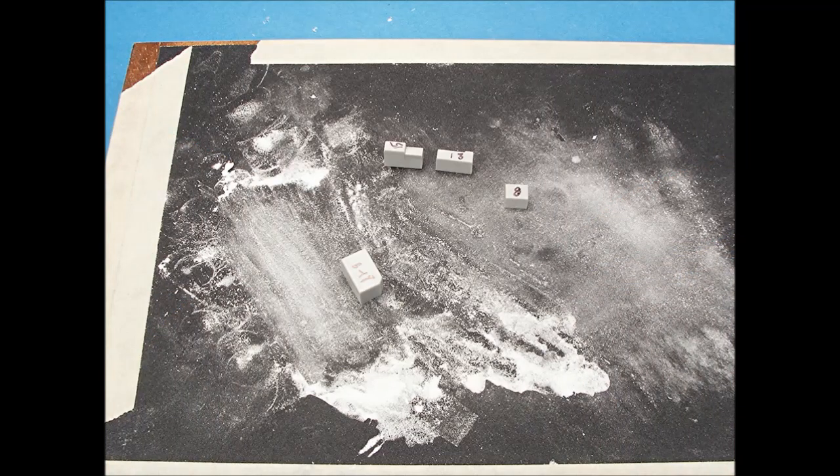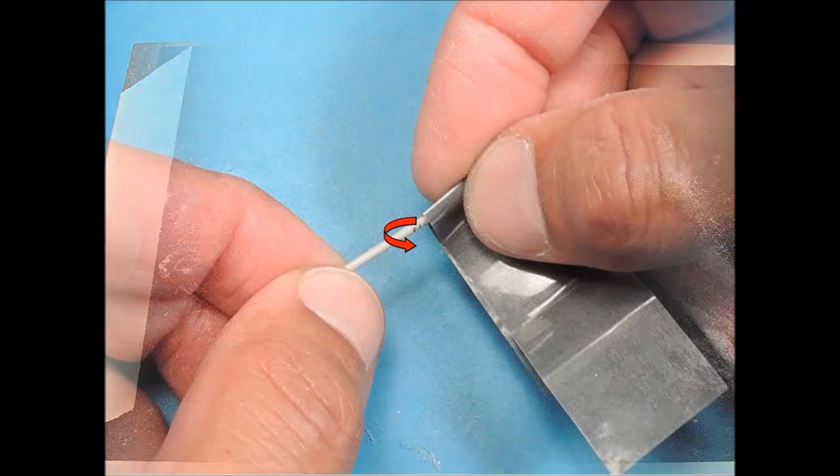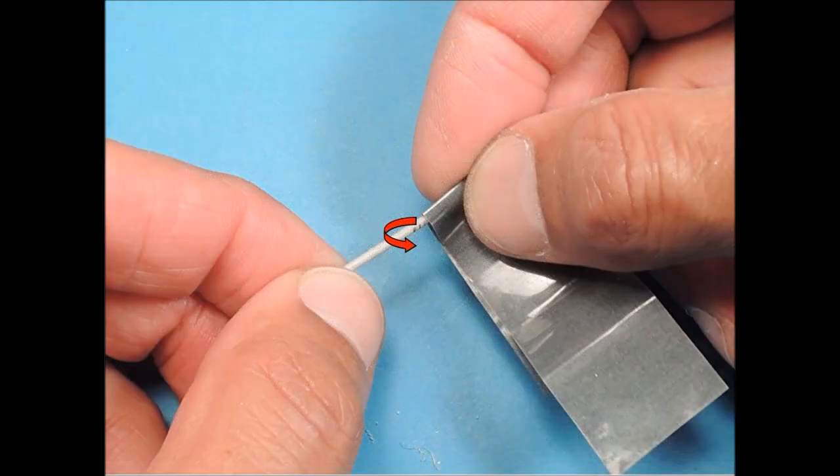To ensure parts have flat surfaces, wet sand them by running them across a stationary piece of sandpaper. After scraping the mold line off on this part, it was rotated inside a length of sandpaper to restore its round shape.